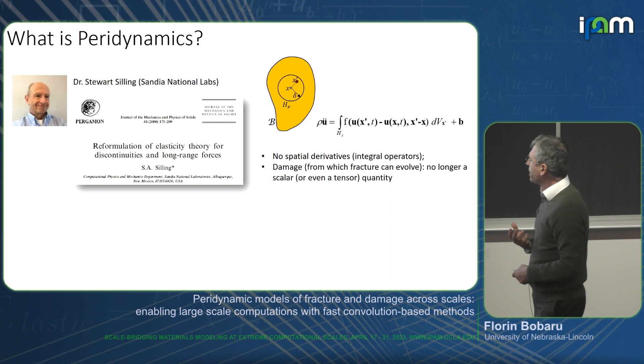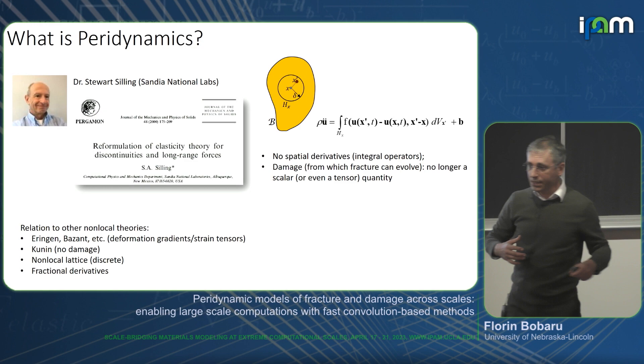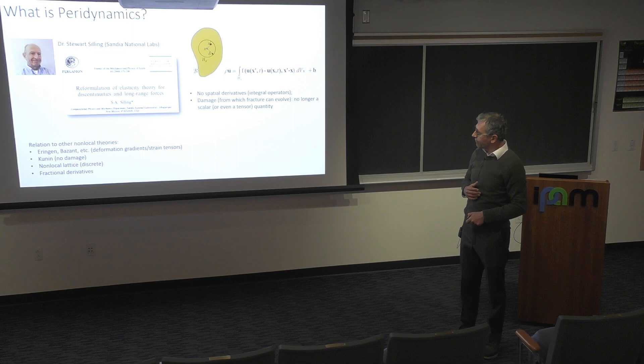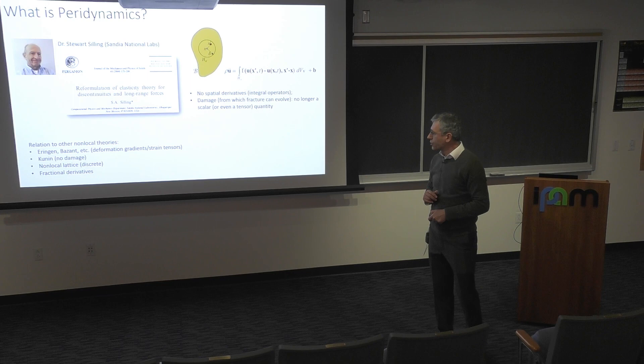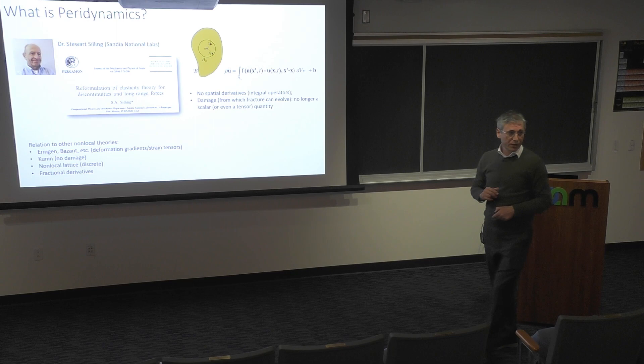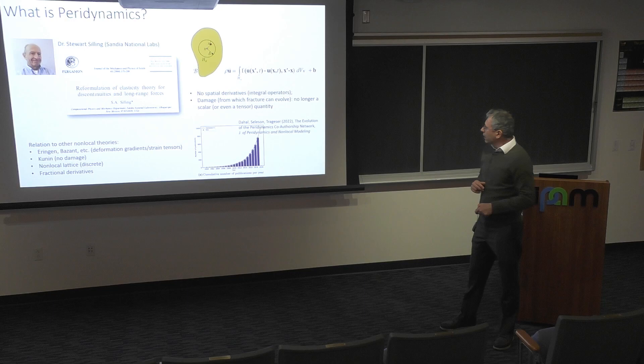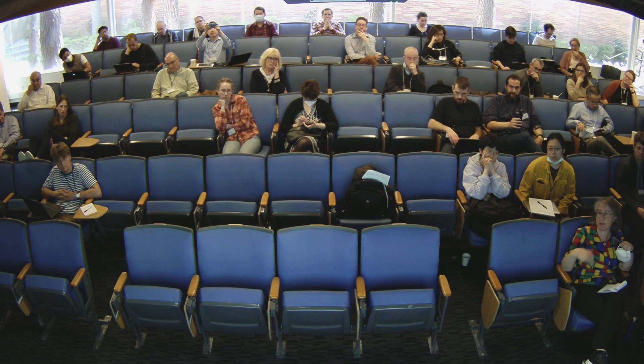There have been non-local theories over the years — many decades ago, Ehring and Barjant — but those theories still have strains, spatial derivatives, and that's when you get into trouble modeling fracture. Fractional derivatives can be seen as particular cases of peridynamic models. [Question about whether the force function inherits symmetries of an underlying crystal.] Yes, this is basically the constitutive laws in here.